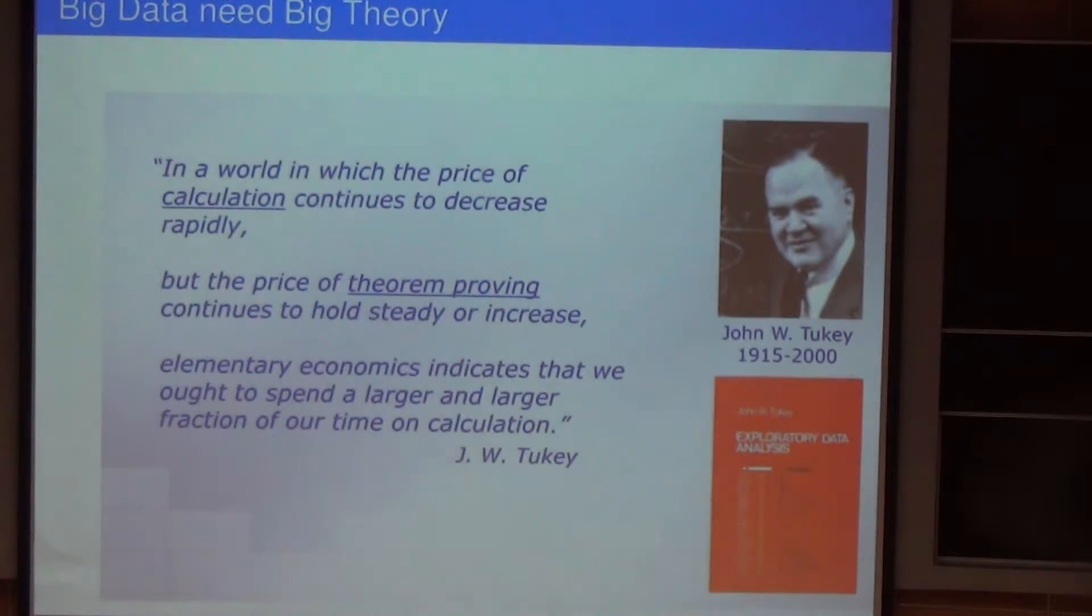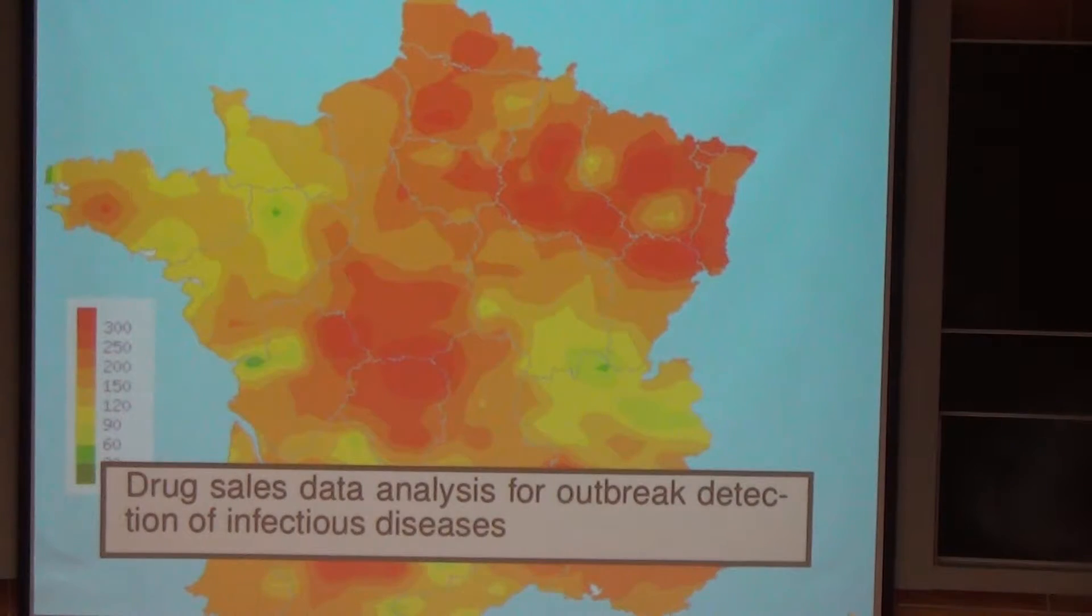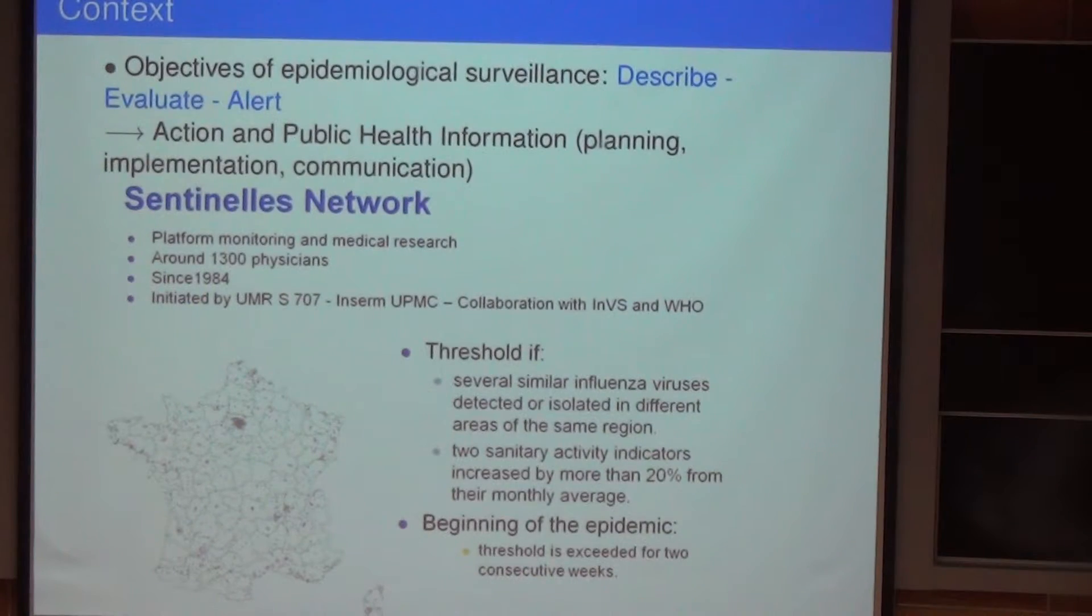He made it in topology, and he did a lot about data visualization as well, explaining that it's the first thing to synthesize the information. But he had a very large spectrum of mathematics. You are perfectly right. So let's see the first application about drug sales data for outbreak detection. That's France, and that's the incidence level of flu, which is quite common for the moment. The flu is about a few thousand people dying every year in France. I'm sorry, I don't know in Mexico, but it's a quite important issue. So if we think about epidemiological surveillance, it has three main objectives: to describe, to evaluate, and to alert. And why we want to alert: to plan, to implement, to communicate, to say to the people to go for vaccination, and so on.